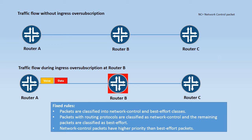For example, during ingress over subscription at router B, if router A forwards a high priority voice packet and a low priority data packet, router B treats these packets as best effort packets. There are chances of router B forwarding the data packet and dropping the high priority voice packet.